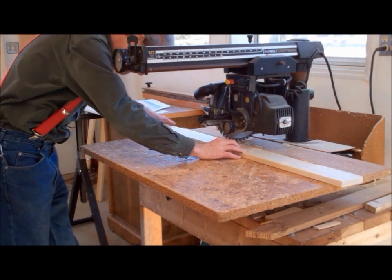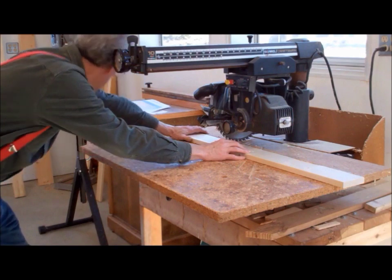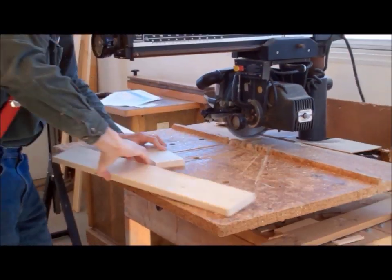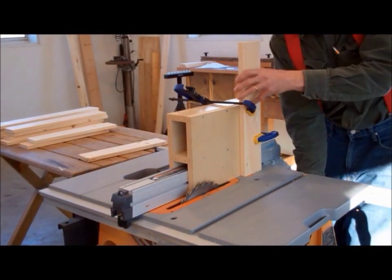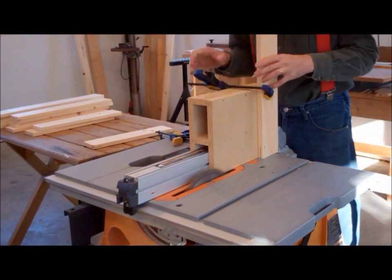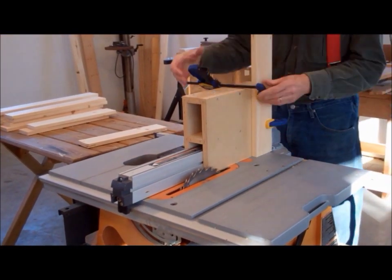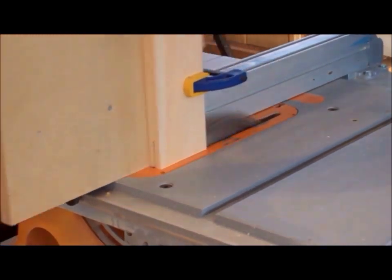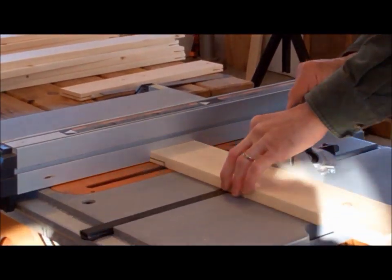Let's recap what we did yesterday. We started by cutting the 1x4s to length. Then we made lap joints on the 1x4s. First we made the cheek cut on both ends of the boards and then completed the lap joint with the shoulder cut.